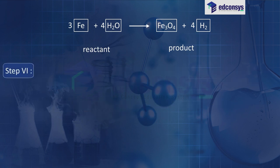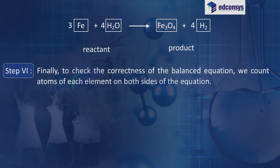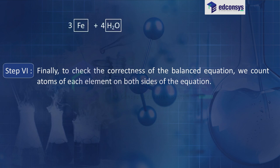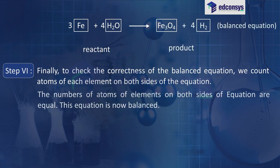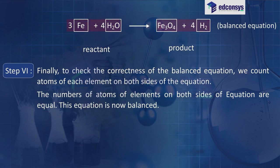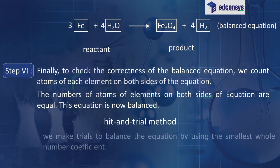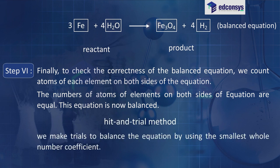Step 6: finally, to check the correctness of the balanced equation, we count the atoms of each element on both sides: 3Fe + 4H₂O → Fe₃O₄ + 4H₂. The numbers of atoms of elements on both sides are equal — this equation is now balanced. This method is called the hit and trial method, as we make many trials to balance using the smallest whole number coefficient.